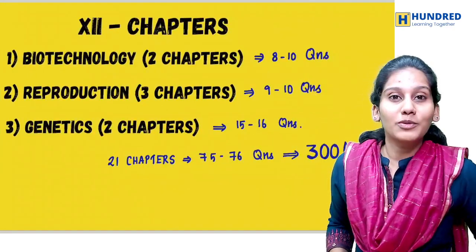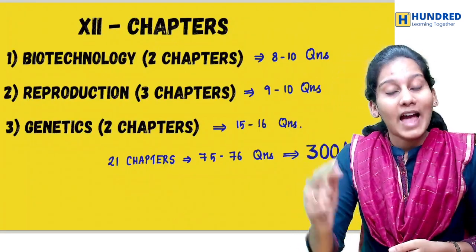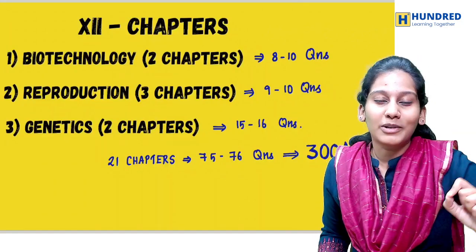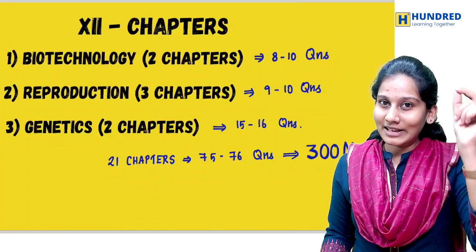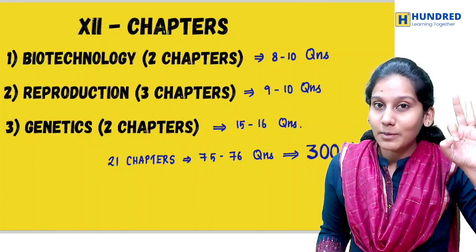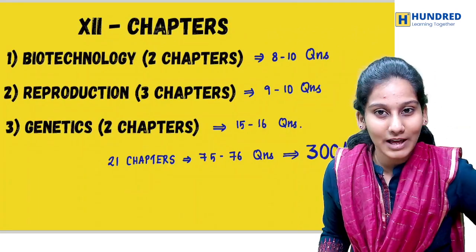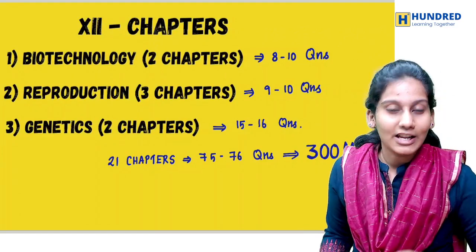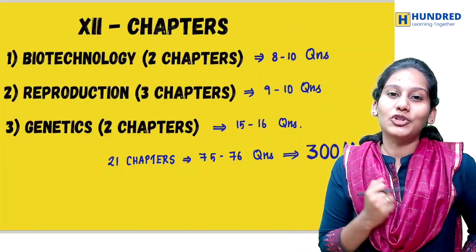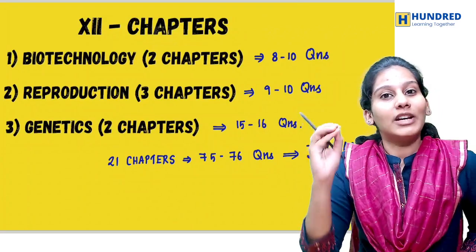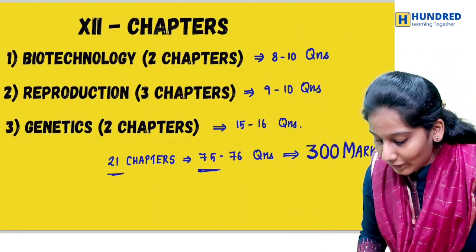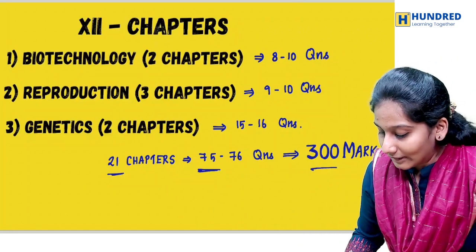12th chapter is Biotechnology - there are two chapters, Principles and Process and also Applications. In every review we have a trick in this chapter. In Reproduction unit, there are 3 chapters - Human Reproduction, Reproductive Health, and Sexual Reproduction in Flowering Plants - 10 questions, 40 marks. From Genetics, there are 2 chapters - Molecular Basis of Inheritance, Principles of Inheritance and Variation - around 15 questions.